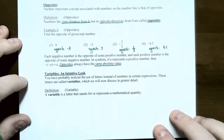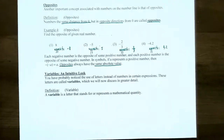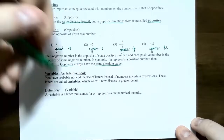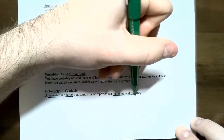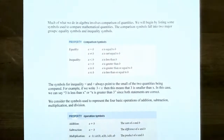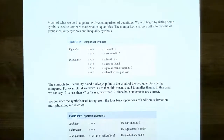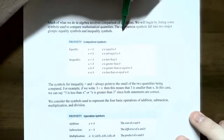Let's finish up by talking about variables. A variable is a letter that represents any unknown real number, and we'll be using variables quite often in this course. Much of what we do in algebra is about comparing quantities — using symbols to compare how large one real number is to another. We use comparison symbols, which fall into two major groups: equality symbols and inequality symbols.